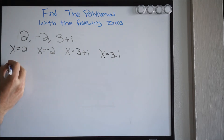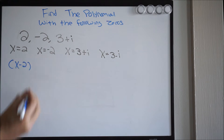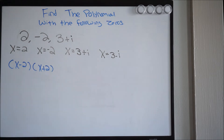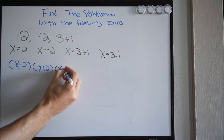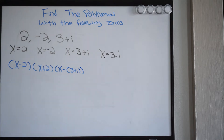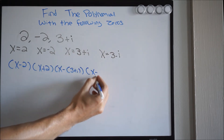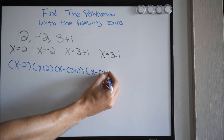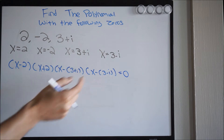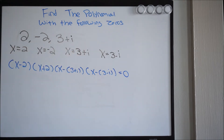So in factored form this would be: (x minus 2)(x plus 2)(x minus (3 plus i))(x minus (3 minus i)) equals 0. You would take each one of your factors and solve for x — that's where these came from. So we're going to work in reverse and simply multiply everything out to get the polynomial with these zeros.